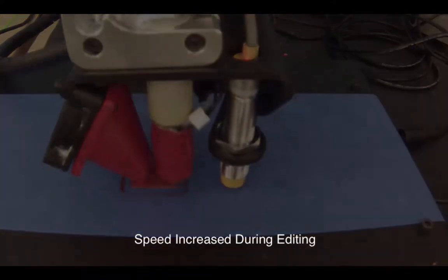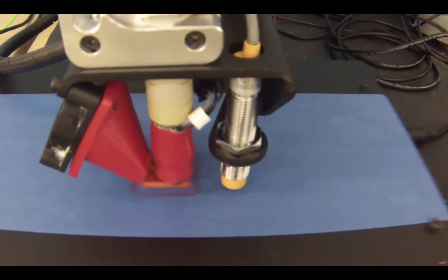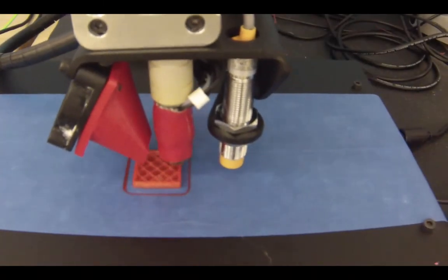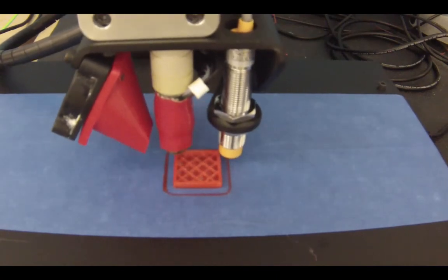As it builds the cube up, there is no need to make the inside solid. So instead, it creates some diagonal lines to fill the inside. You can control how solid or how hollow the inside is. This is called infill.